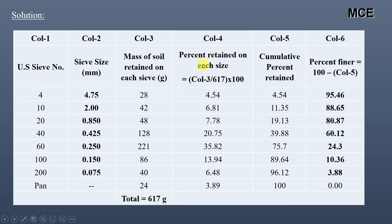The fourth column shows the percent retained on each sieve. This is obtained by dividing the mass of soil retained on each sieve by the total mass of 617 grams and multiplying by 100. For the first sieve it is 28 divided by 617 times 100, which is 4.54%. For the second sieve it is 42 divided by 617 times 100, which is 6.81%. For the third sieve it is 48 divided by 617 times 100, which is 7.78%. Similarly for the rest of the sieves.